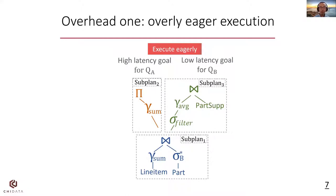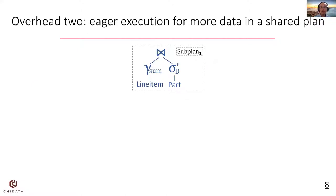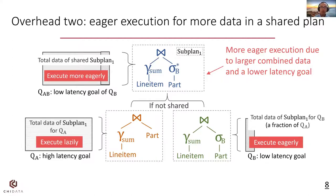There are two cases of overhead. First, some subplans have overly eager execution. For example, subplan 2 of QA is executed more eagerly than it should be. Because QA has a high latency goal, this over-eager execution increases CPU consumption because the aggregate operator needs to repeatedly remove its prior output tuples. The second overhead is that the shared subplan will be executed eagerly for a larger combined data. If we execute the two queries separately, QA's subplan is executed lazily, and for QB, although we execute it eagerly, we may only process a small amount of data due to QB's predicate. For the shared plan, we need to execute it eagerly for all the combined data of QA and QB to meet the lower latency goal of QB.